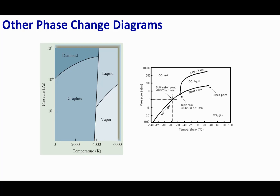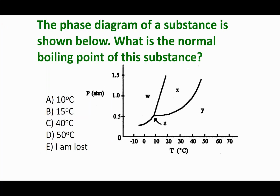Phase diagrams can get more complicated — you can have different solid phases. For example, carbon has two solid phases: diamond and graphite. Here is the phase diagram of carbon, which tells you the most stable phase. Notably, if you increase the pressure of pencil lead (graphite), you'll eventually reach a region where diamonds are more thermodynamically favorable.